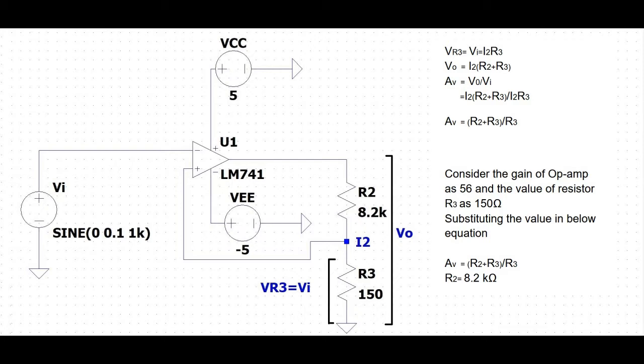So V of R3 would be equal to zero. Therefore, the current I2 flowing through resistors R2 and R3 must also be zero, resulting in zero voltage drop across R2 as well. This means the output voltage equals the input voltage. You can see the calculation of the gain of the non-inverting amplifier using the resistor values of R2 and R3.